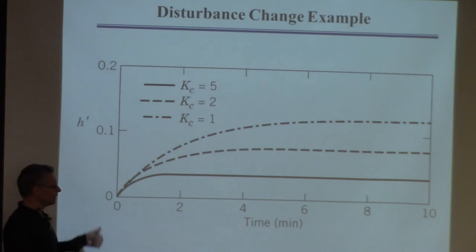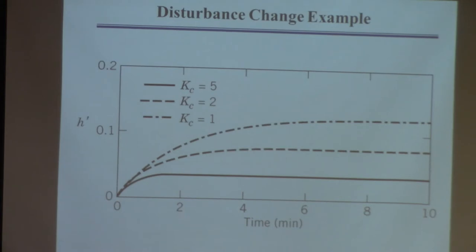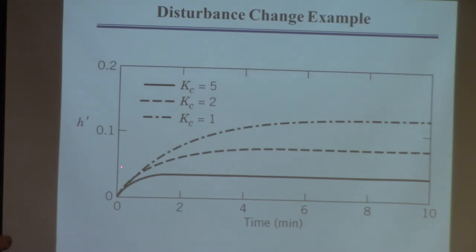The level's going to go up and you're trying to compensate for it. You see the level go up because now you have more flow into the tank than flow out of the tank. Level goes up, and your job is to cut back on Q1 — that's the controller's job. If KC equals one, that's a relatively small value of the controller gain, and it does this; it doesn't actually get back there.